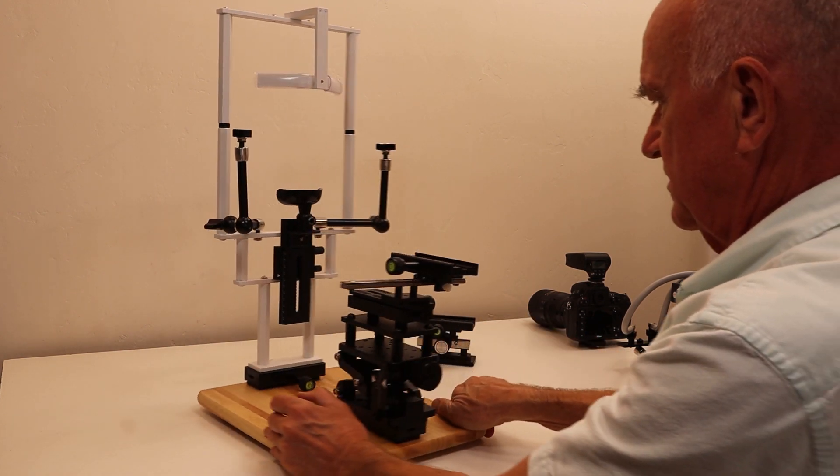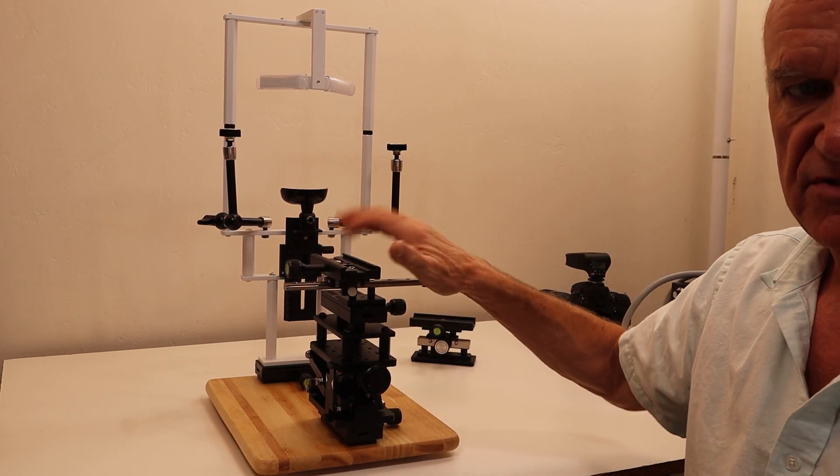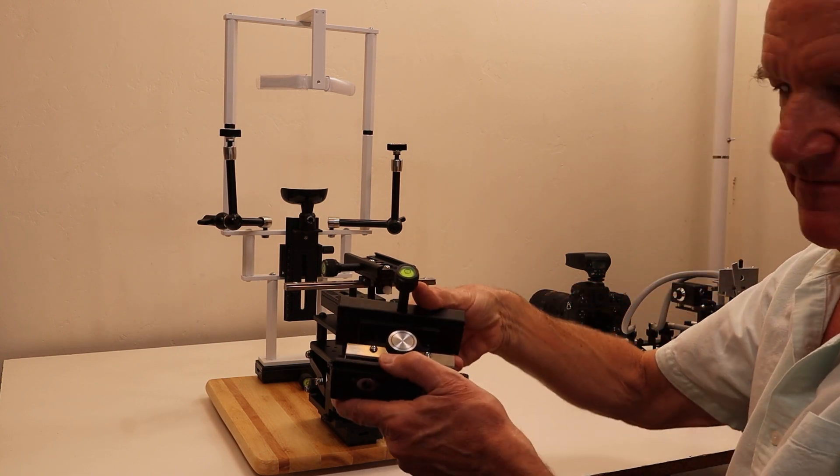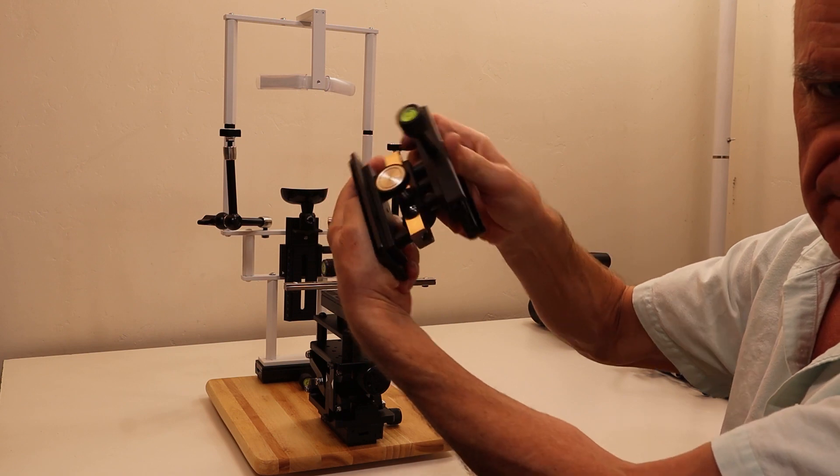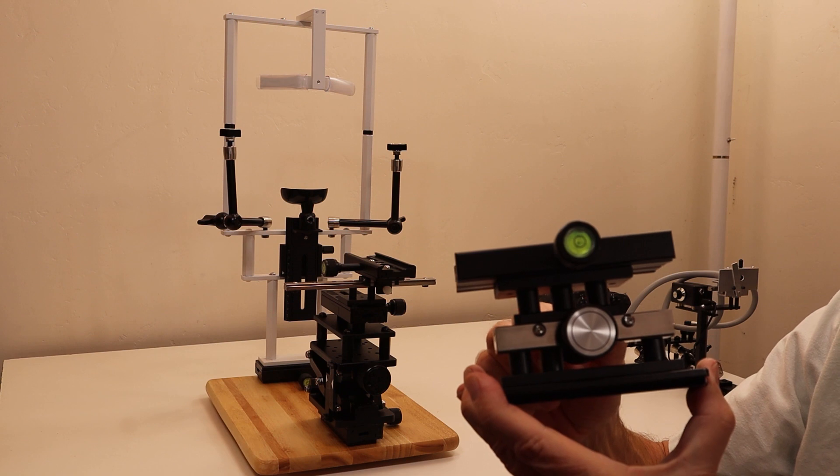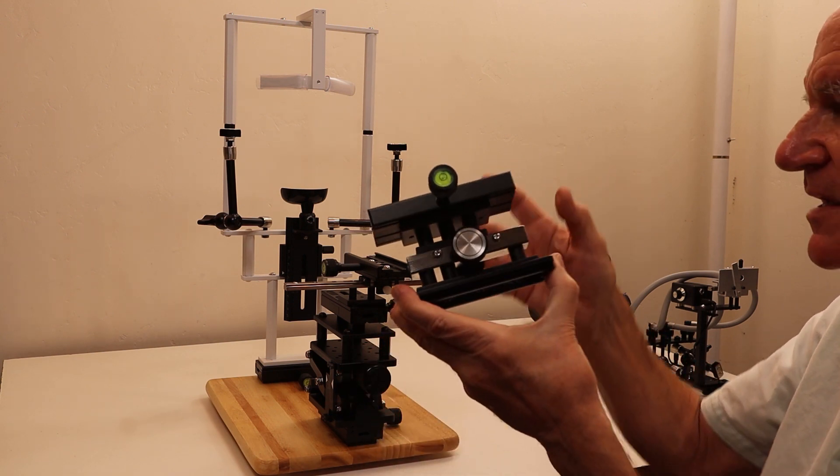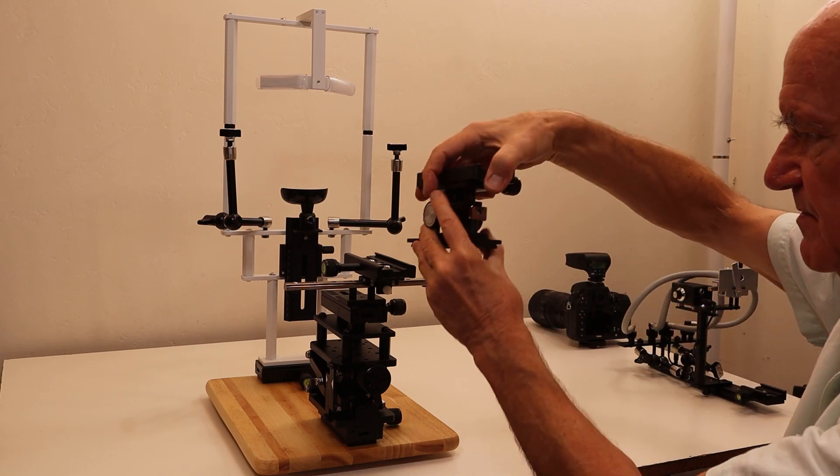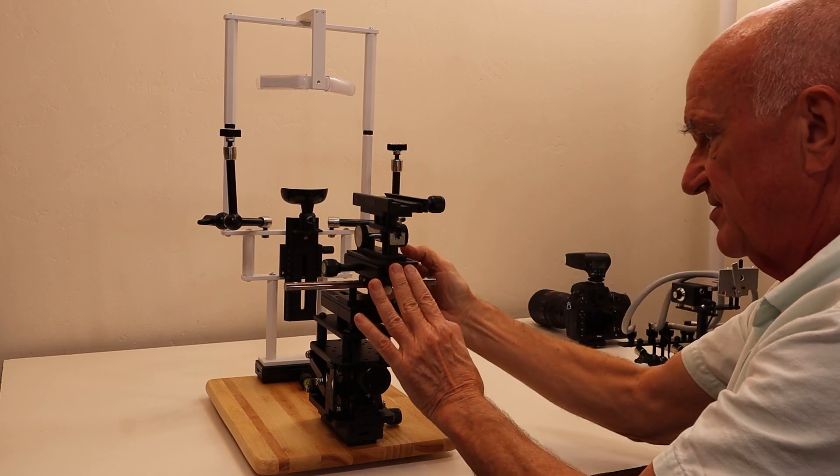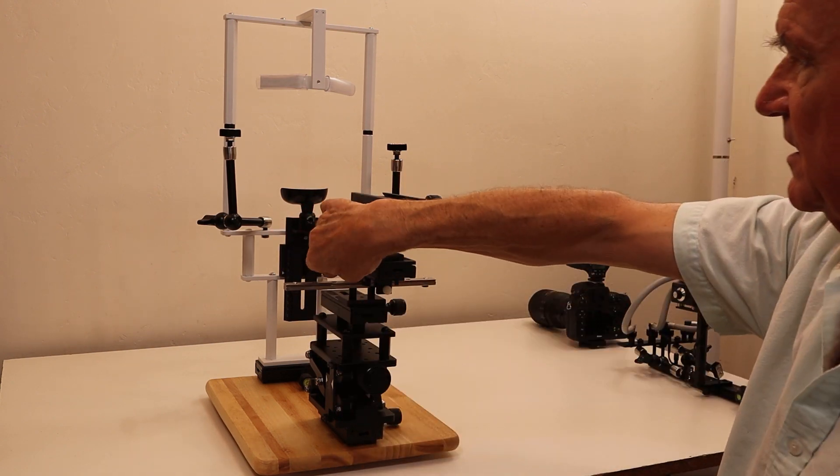The last part, number five, is the focus track. This is a new design with a very smooth precision mechanism with a knob on each side. It can go on either way - I usually put it opposite of this knob. You slide it in until it's flush and then tighten that.